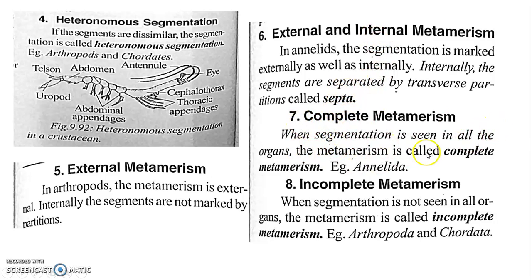Complete metamerism: when segmentation is seen in all the organs, it is called complete metamerism. Incomplete metamerism: when segmentation is not seen in all organs, and is present only in certain regions, it is called incomplete metamerism. Examples include arthropods and chordates. This concludes the discussion about metamerism in annelids.